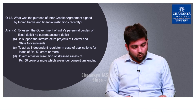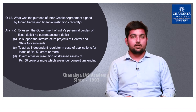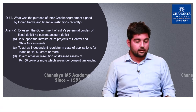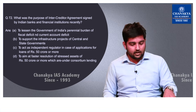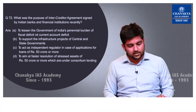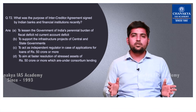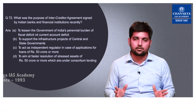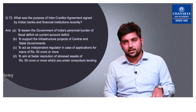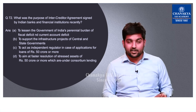Question number 72 asks about the inter-creditors agreement signed by Indian banks and financial institutions, which pertains to the NPA issues ailing the banking system. Going logically, the correct option is D — its aim to foster resolution of stressed assets of 50 crore or above under consortium lending. Consortium means a group of financial institutions lending to a particular entity; when that entity defaults, this agreement facilitates resolution when banks could not easily arrive at an agreement.